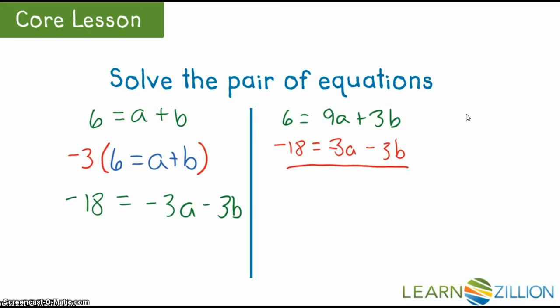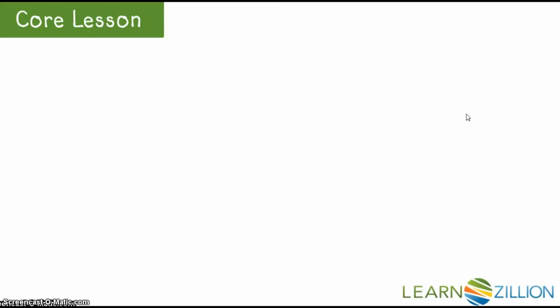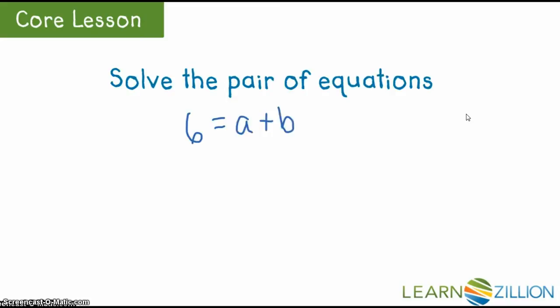Solving for a, I get a equals negative 2. By substituting negative 2 into the equation 6 equals a plus b and solving, I get 8 equals b.